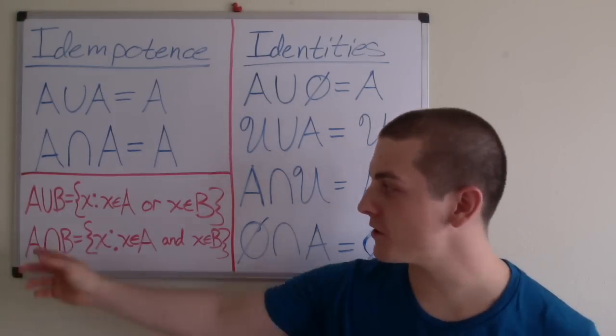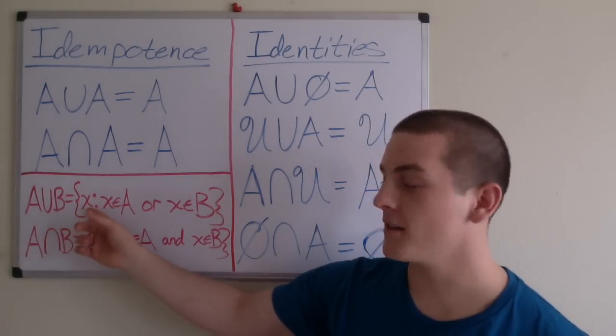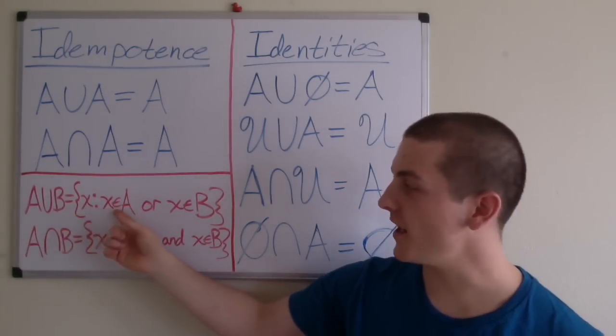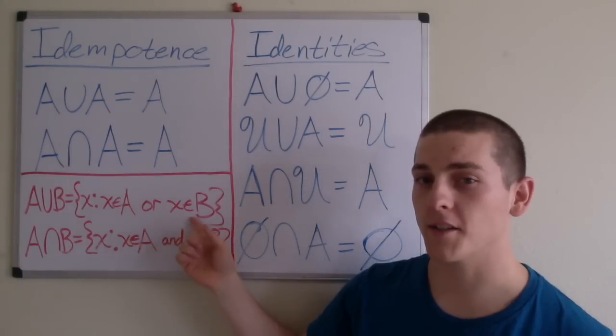So the definition of A union B equals the set containing elements x such that x is an element of A or x is an element of B.